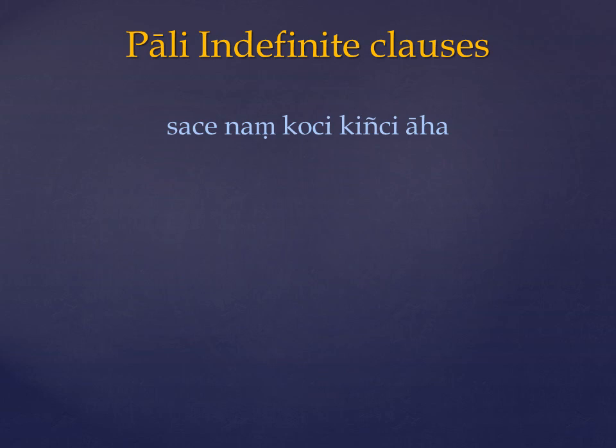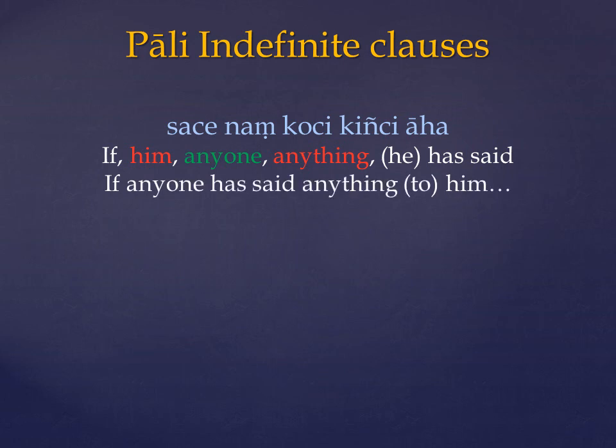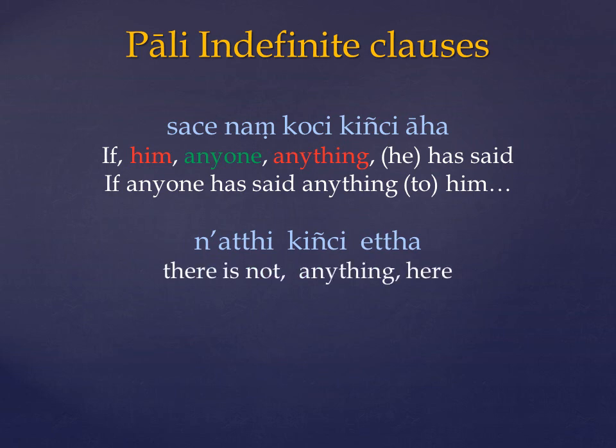Word-for-word this translates: if, him, anyone, anything, he said. Now verbs about telling and saying often take two objects in the accusative. So we can see that kochi, being in the nominative case, is the subject, and ṃ and kinci are both accusative and will form the objects of the verb. So from this we can work out the sentence as: if anyone has said anything to him. The next example word-for-word means: there is not anything here. Or in simpler English, there's nothing here.